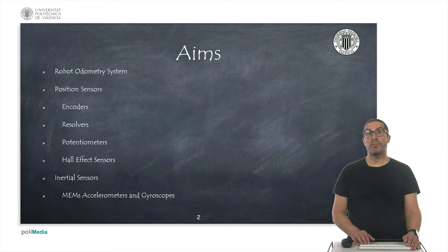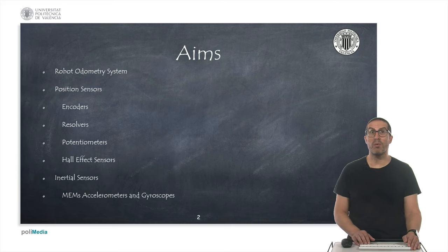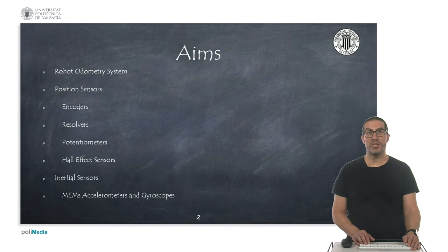This is the table of contents of the presentation in which we will talk about the odometry system of a robot, its importance, and the inherent problems it has. Specifically, we will focus on sensors to measure the position of an axis such as encoders, resolvers, potentiometers, or Hall effect sensors. Finally, we will talk about inertial sensors such as accelerometers and gyroscopes based on MEMS technology.